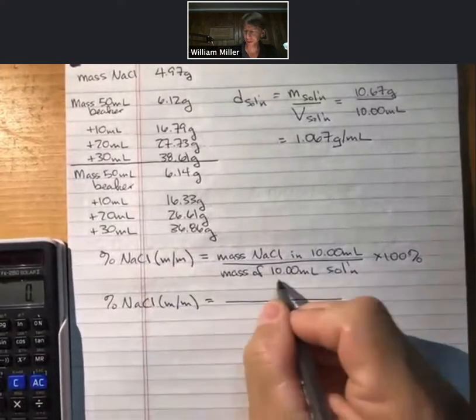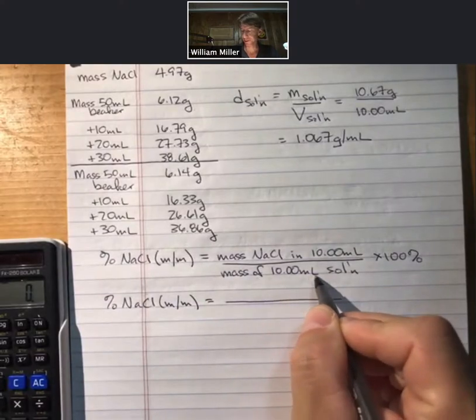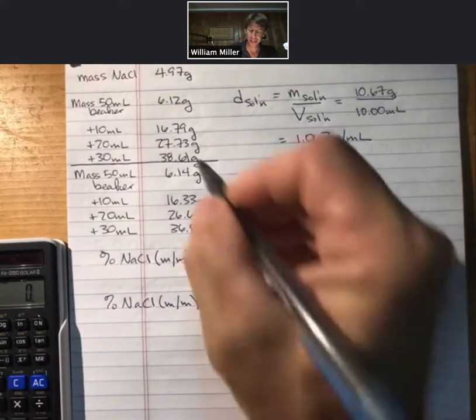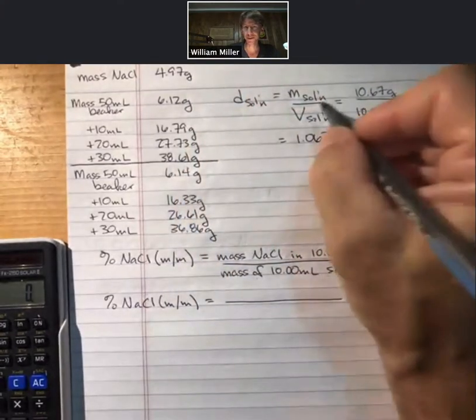And we'll do the denominator first. So we've got our mass of 10.00 milliliters of solution. That's based on the subtraction that we did up here, because this was mass of solution.